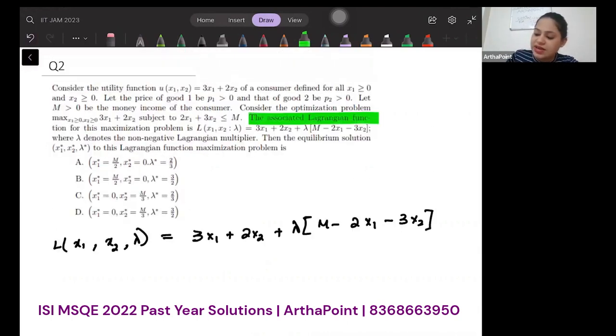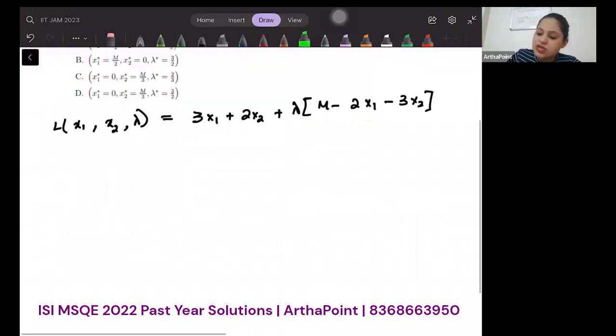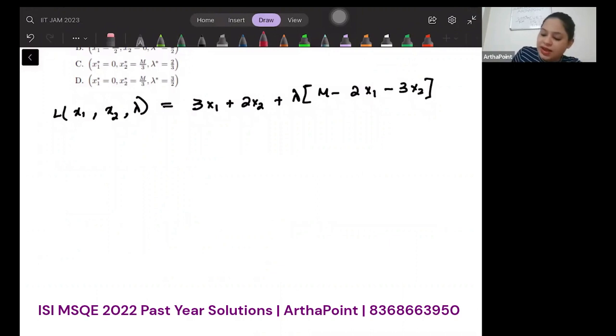It says the associated Lagrangian function is this, right? Find x1 star, x2 star and lambda. Suppose I use my usual method and start with this: ∂L/∂x1 will be 3 plus lambda minus 2 equals 0.